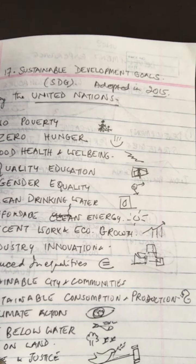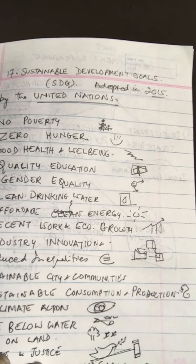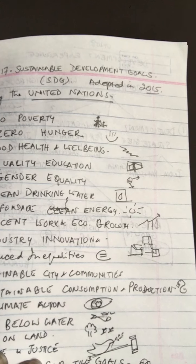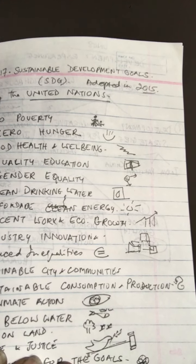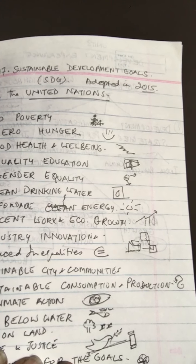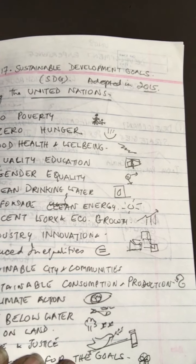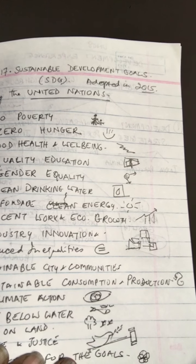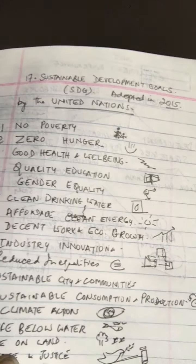Goal 2 is Zero Hunger — to end all forms of hunger and malnutrition by 2030, making sure all people, especially children, have access to sufficient and nutritious food all year round. It seeks to end all forms of malnutrition, double agricultural productivity, and ensure sustainable food production.